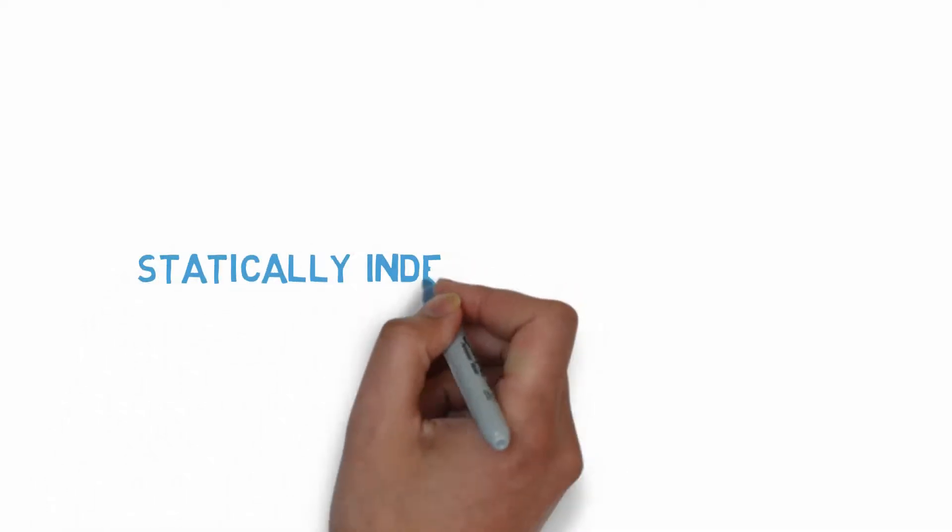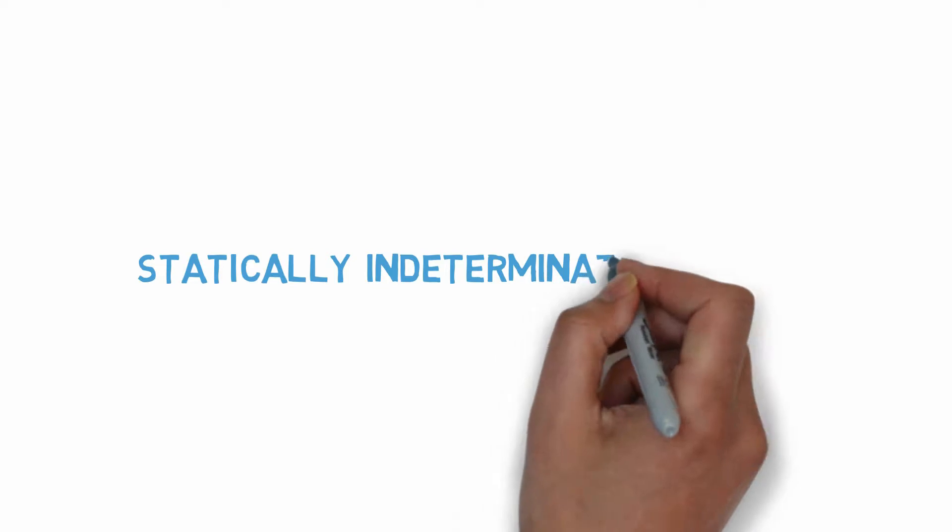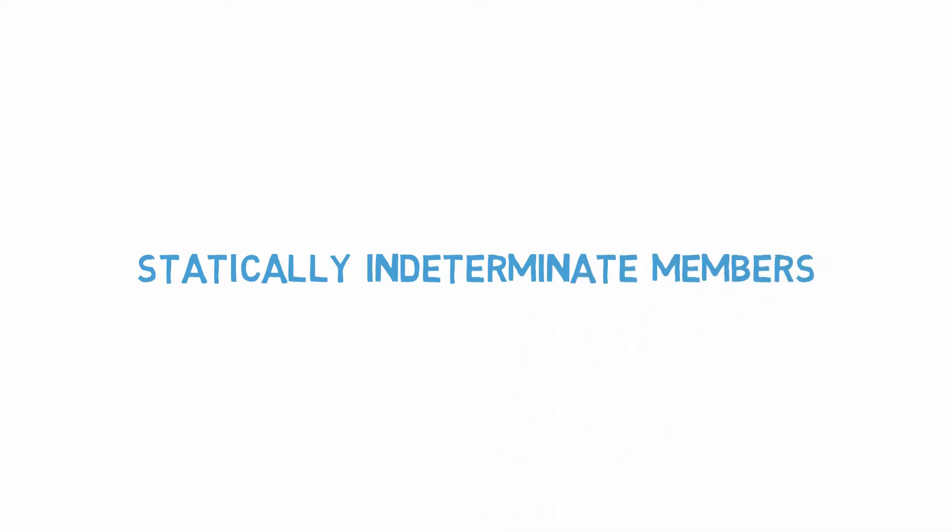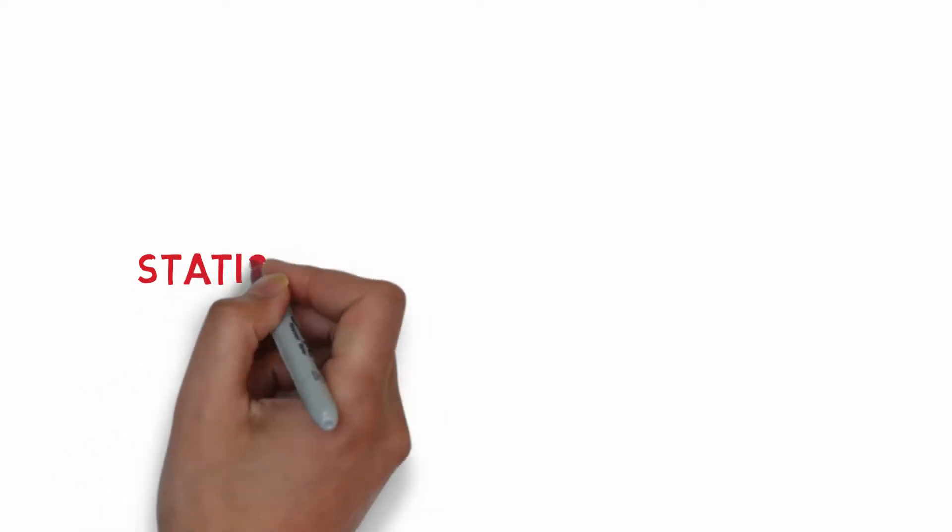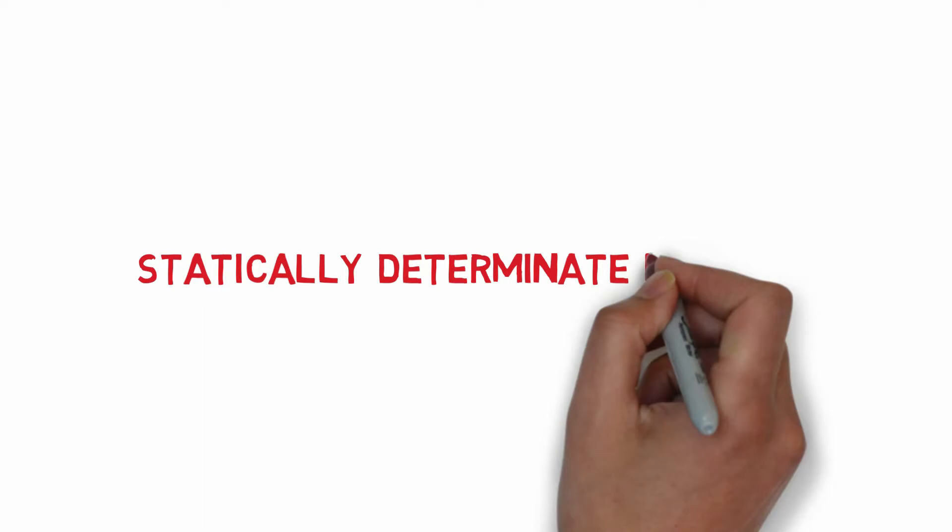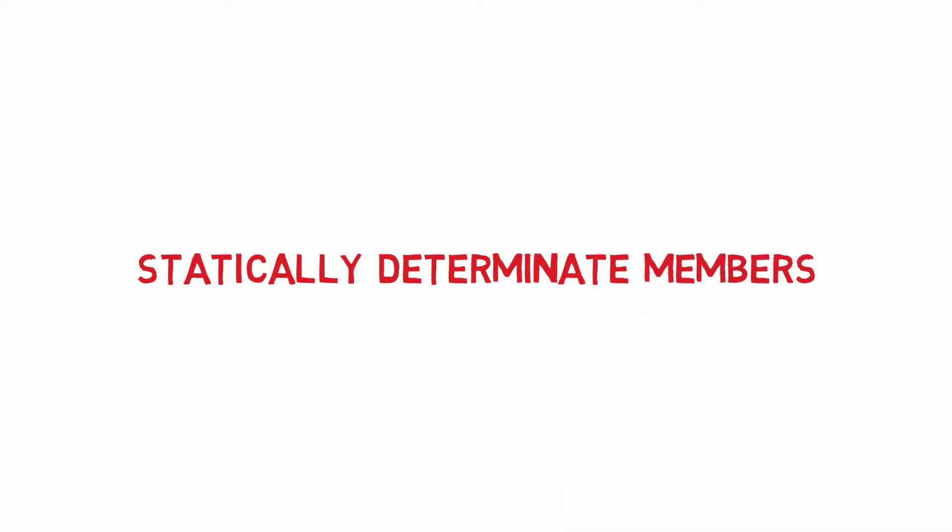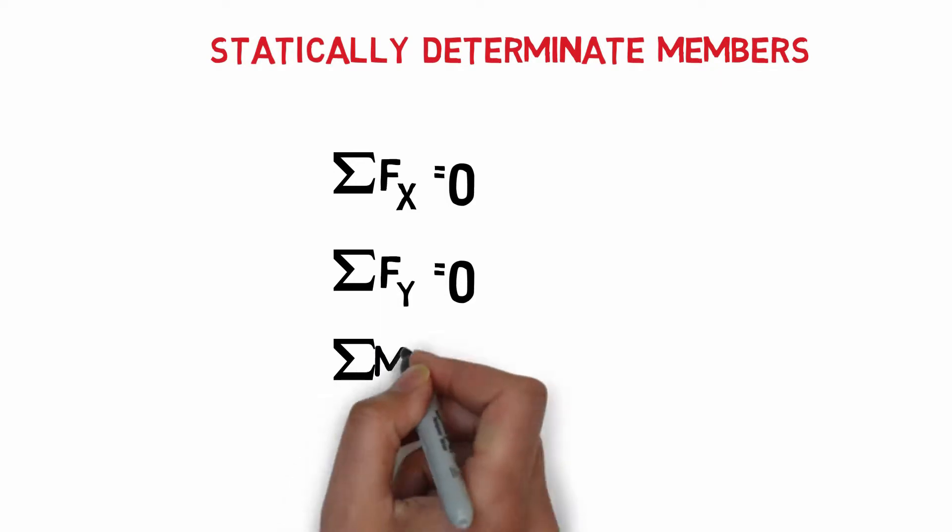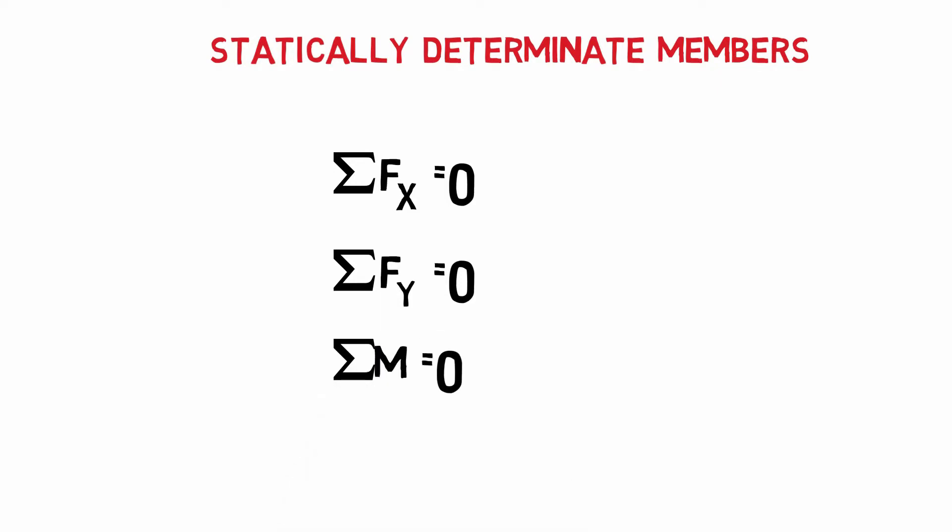In today's tutorial we will be looking at statically indeterminate members. A member is called statically determinate when its unknown reaction forces can be calculated solely using the basic equilibrium equations. We have already covered these kinds of members in Lab 1. Please watch the Lab 1 video to see the procedure for solving this kind of problem.